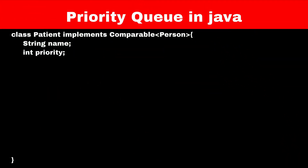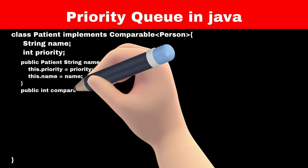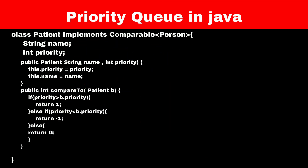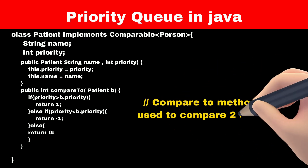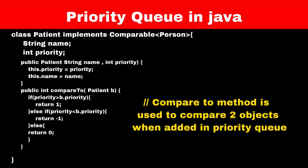Now let's see how we can use a priority queue in Java. First, let's create a Patient class, which will have the patient name and their priority. We will also define the constructor and compareTo method in this class. The compareTo method is used to compare two or more objects of a class. When we add these objects into the priority queue, we need to tell the priority queue which object should come first — that is, which object has the highest priority — and the compareTo method is used for that.